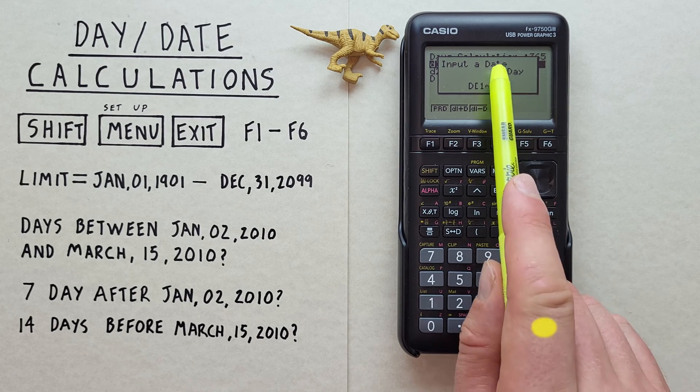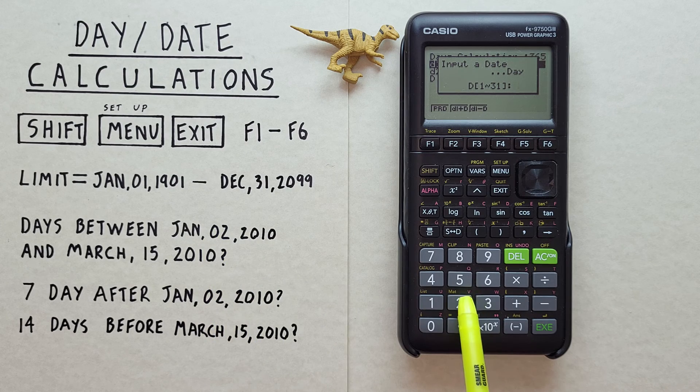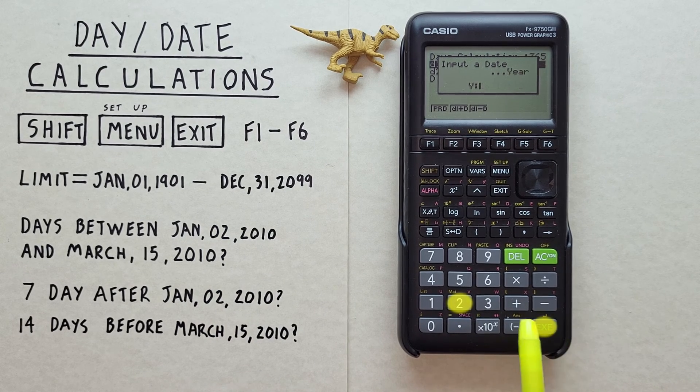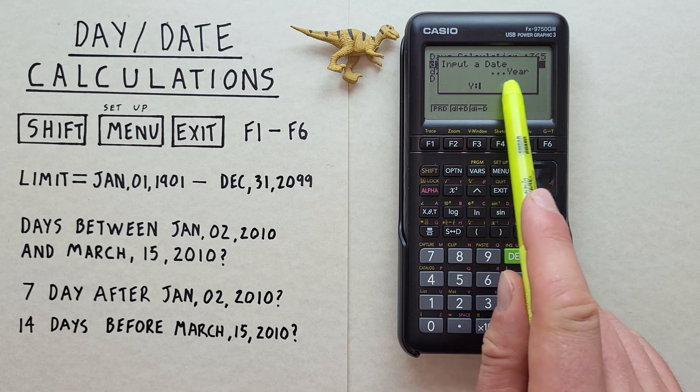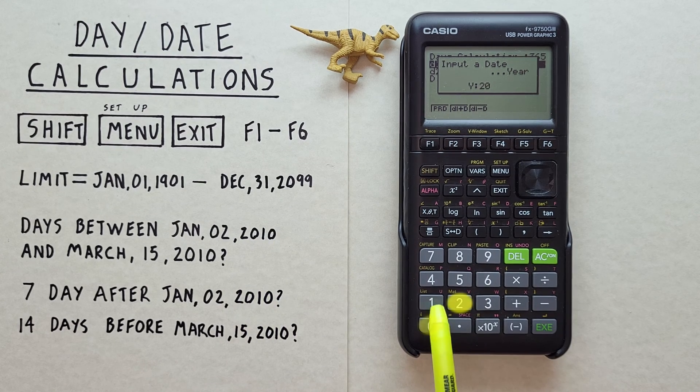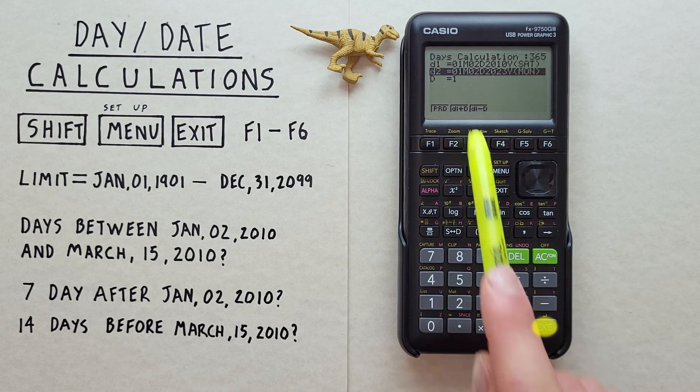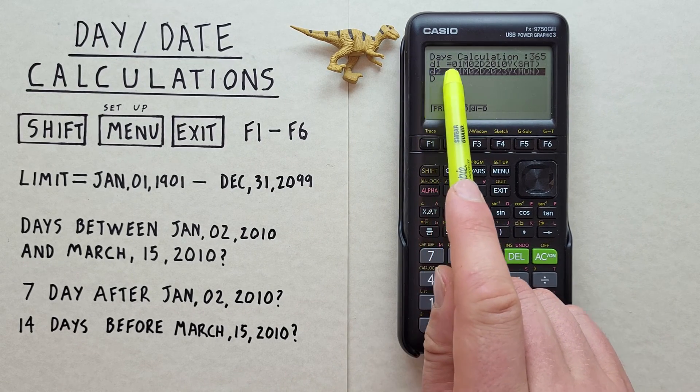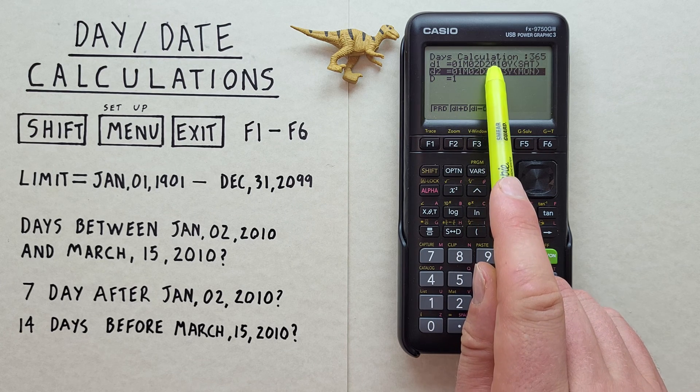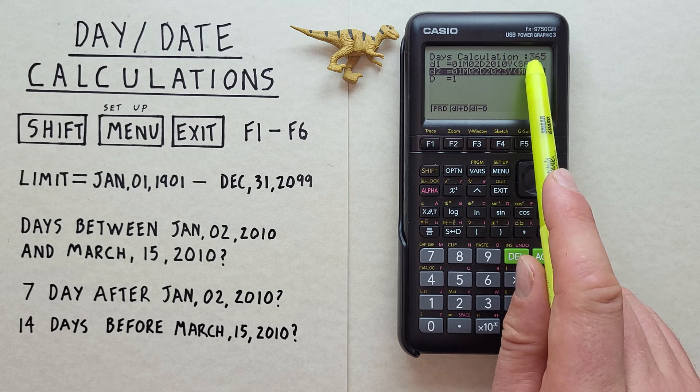And then the input date, day. We have the second, so we have two. And then input date, year, we have 2010. And hit EXE. And there we see under D1, we have the first month, second day, year 2010, which is a Saturday, it tells us.